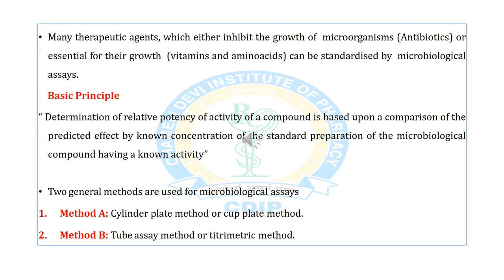There are two general methods used for microbiological assay: Method A is the cylindrical plate method or cup plate method, and Method B is the tube assay method or turbidimetric method. These are the two methods used for microbiological assay.